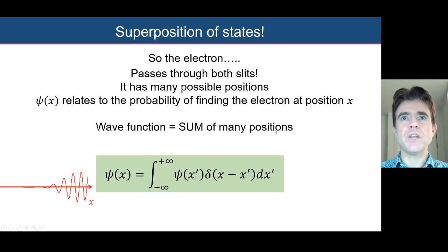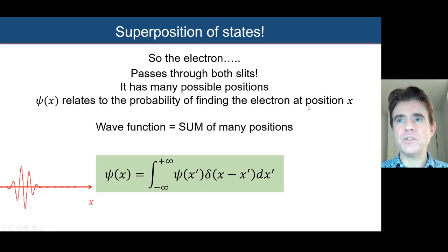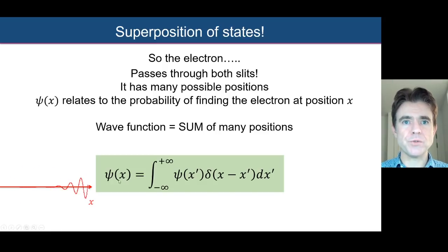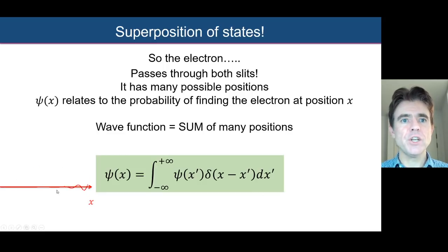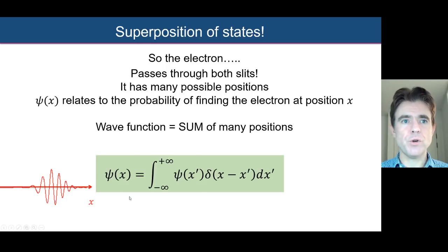The electron passes through both slits and has many possible positions. The wave function relates to the probability of finding the electron at a particular position x, and is a sum of many possible positions — that's the equation we just looked at. Here I'm showing a Gaussian wave packet, but we're dealing with static functions not changing with time, so that fixed function is more like what we're showing with this integral equation — made up of lots of different particular positions.